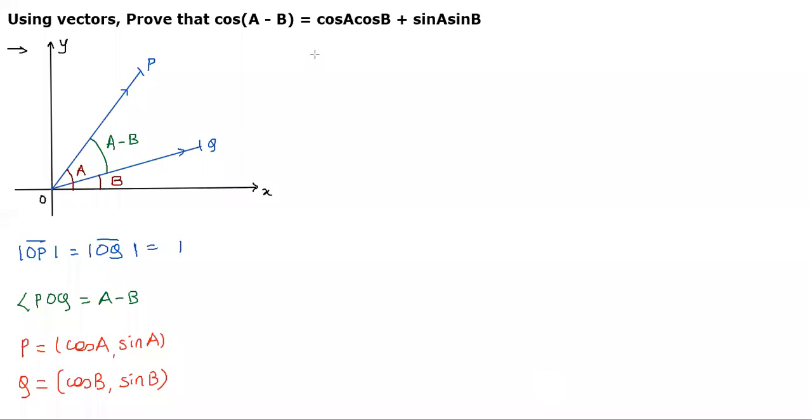Next step, I would like to get the two vectors OP bar and OQ bar. OP bar can be written as P = cosA i cap + sinA j cap. While OQ bar can be written as Q = cosB i cap + sinB j cap.